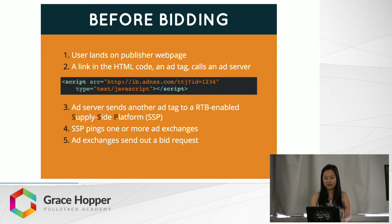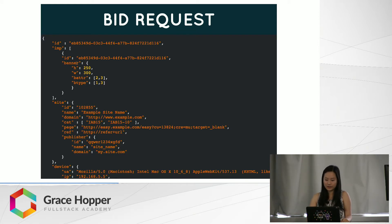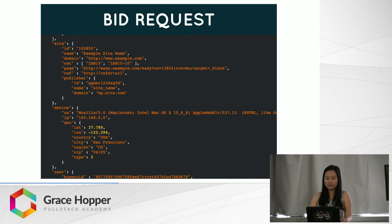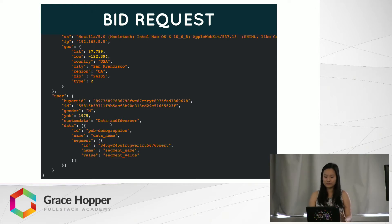As a response to that, the ad exchange sends out a bid request, and this is what a bid request looks like. The ID is the ID for this specific auction. IMP stands for impression, and one impression is every time an ad server is called. There's an ID for the impression, and the banner in this example — let's say Facebook — has a banner ad with its dimensions. It has information about the site, the device the user is on, and information about the user. In this example, gender is male, born in 1975, and they're getting this information from cookies in your browser — either a first-party cookie or a third-party cookie.